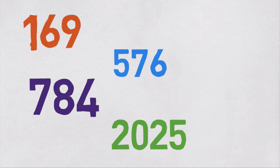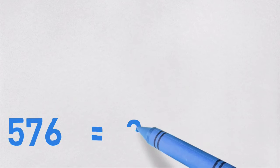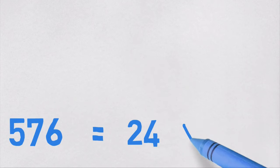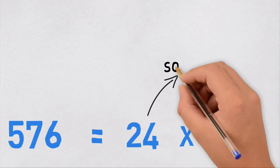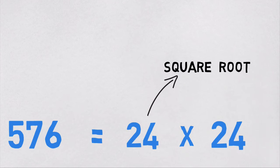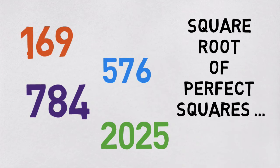A perfect square is a number that can be expressed as a product of two equal integers. If we consider one of these numbers, say 576, it can be expressed as a product of 24 times 24. So 24 is the square root of 576. In this video, we will look at a cool way to find the square root of a perfect square.